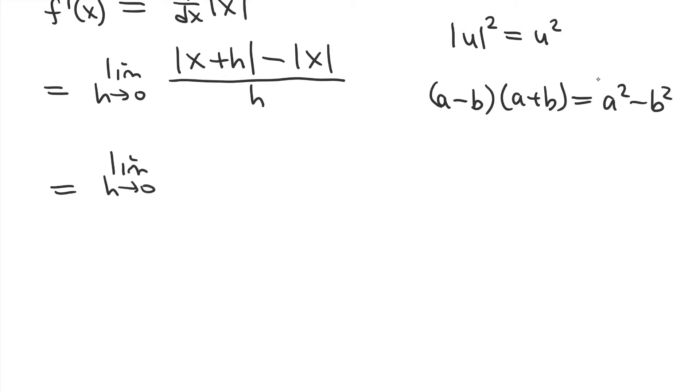Limit h to 0 of our expression. And then, we're going to multiply by 1. In the numerator, absolute value of x plus h plus absolute value of x. And again, we have to divide by the same thing, because by multiplying by 1, we're not changing the value of the expression.